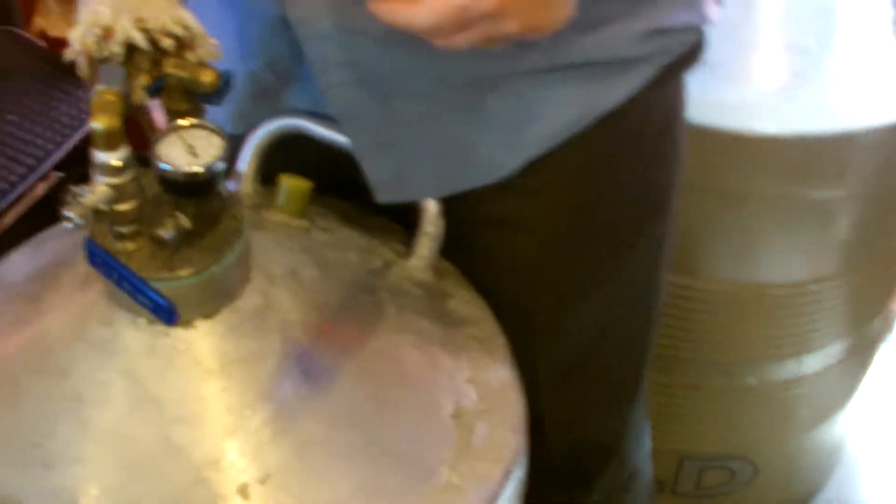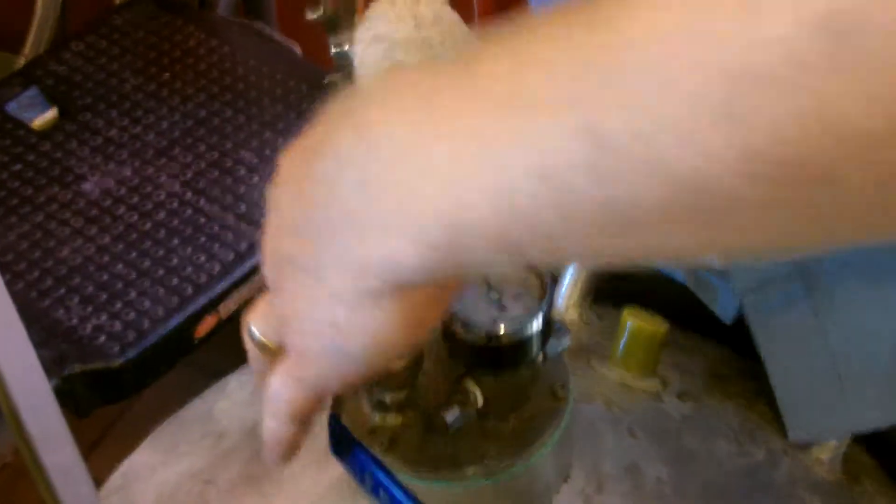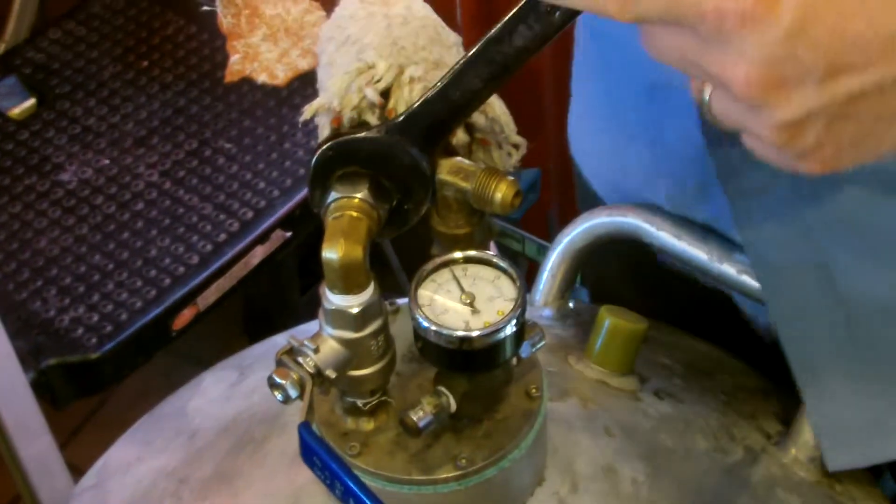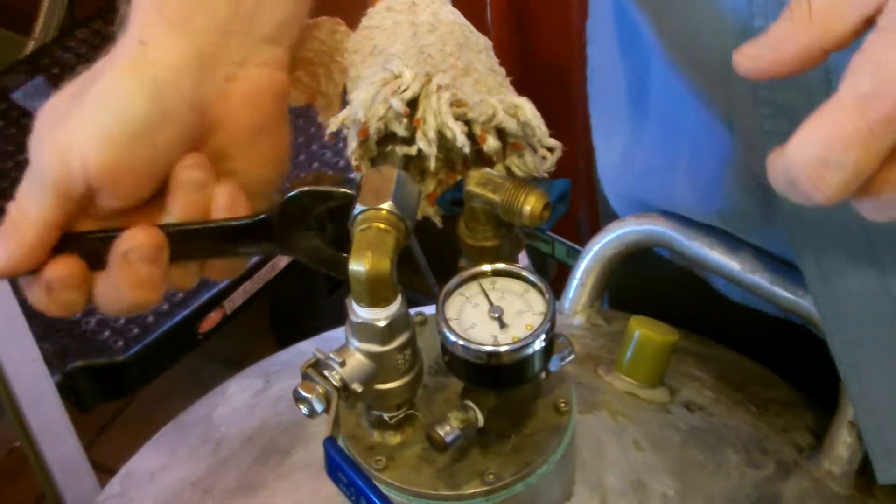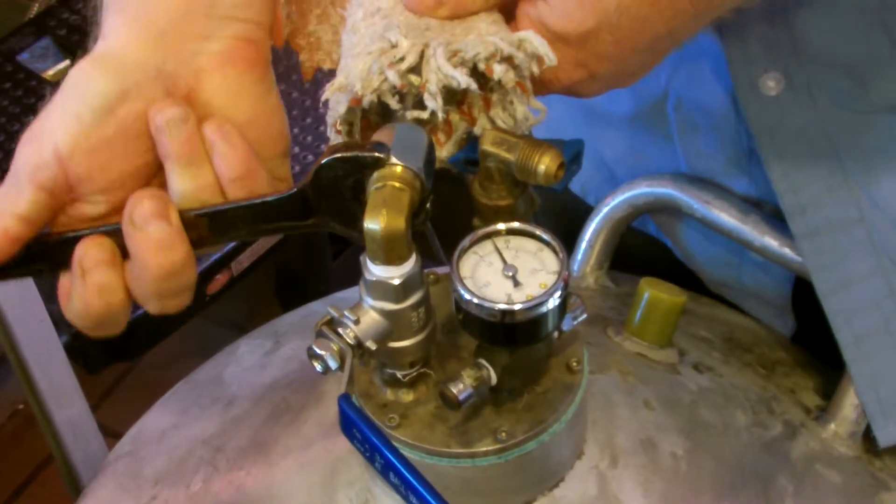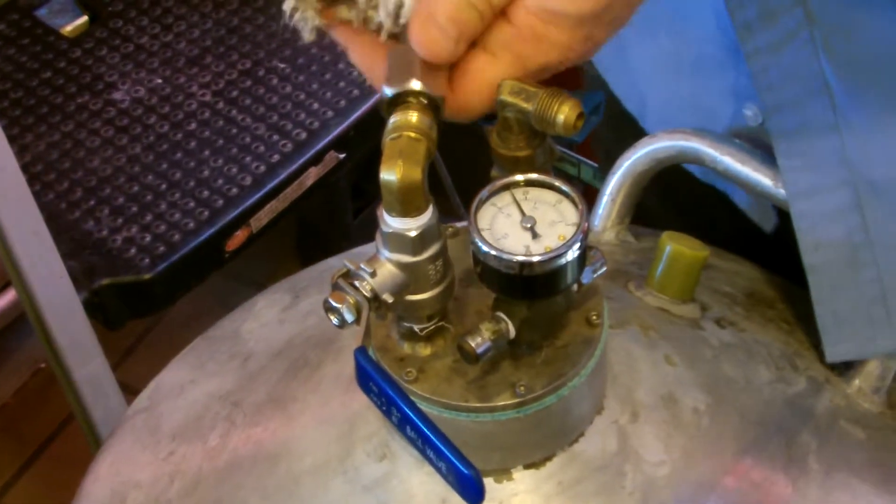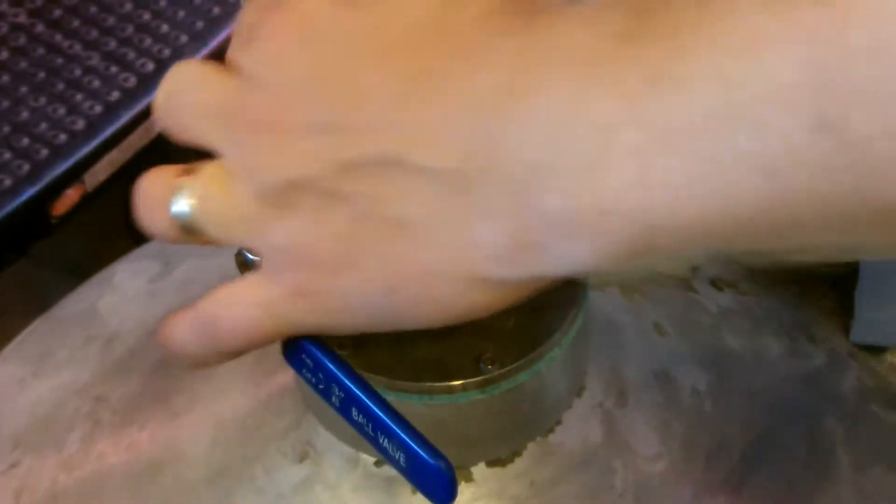We're going to put that on finger tight first because you don't want to cross thread. If you cross thread it, you'll have to replace this fitting. In other words, you know what I mean by cross thread - the threads aren't lined up. So use your hand to feel the threads and get it lined up. It won't go on cross-threaded if you're using finger tight.